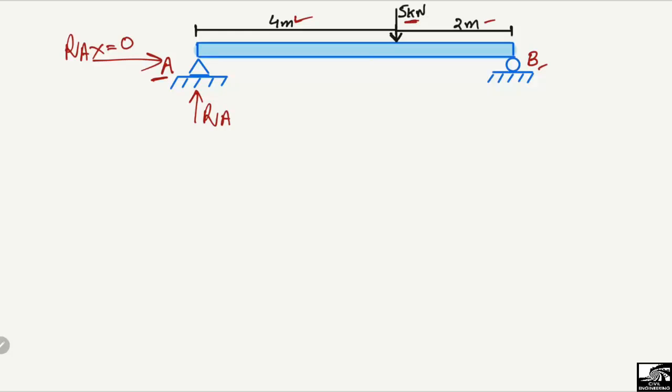Since there is only a vertical load acting on this beam, the other support at B is a roller support. The property of a roller support is that it can only resist vertical loads, so we have only one vertical reaction RB. We therefore have two unknowns: RA and RB.